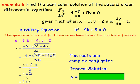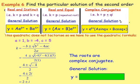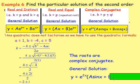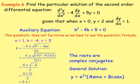The general solution for complex conjugate roots of the form p ± qi is y = e^(px)(a sin(qx) + b cos(qx)). Here p = 2 and q = 1, so the general solution is y = e^(2x)(a sin x + b cos x).